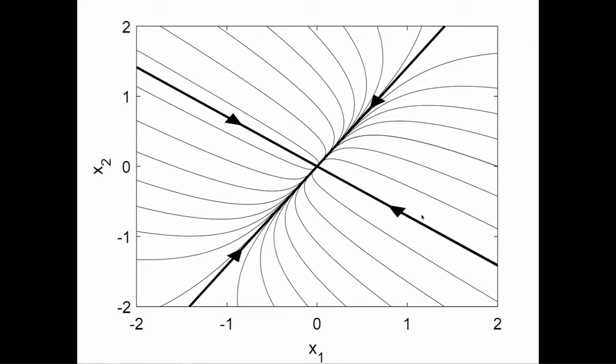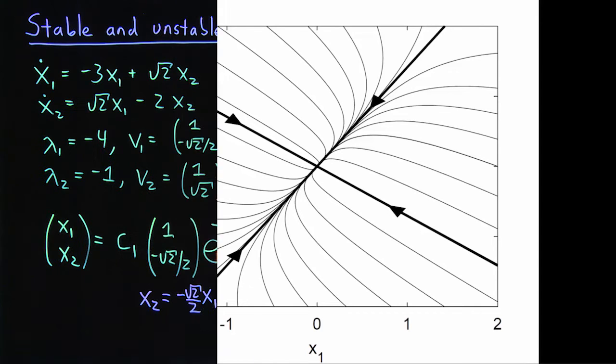Because the first eigenvector is decaying like e to the minus 4t, and the second eigenvector is decaying like e to the minus t.